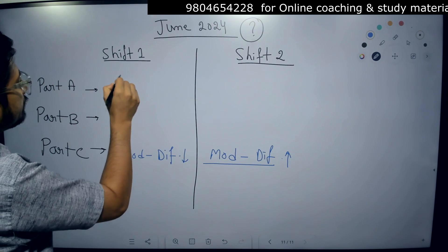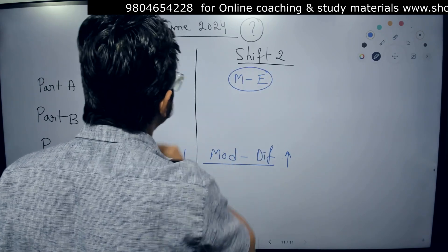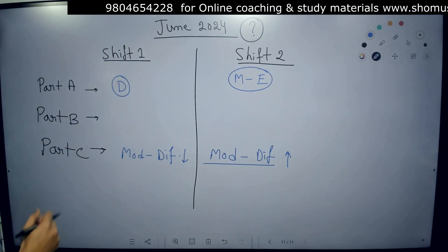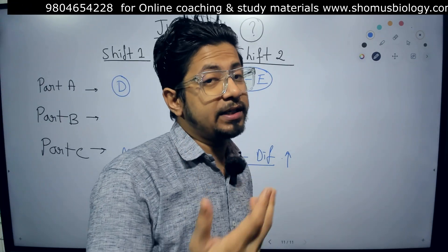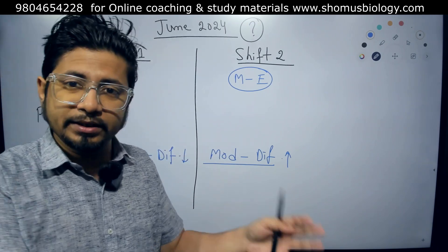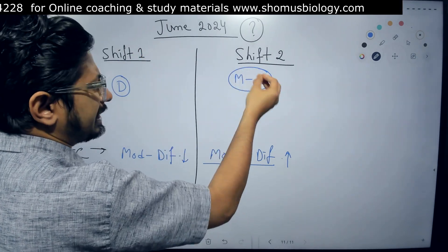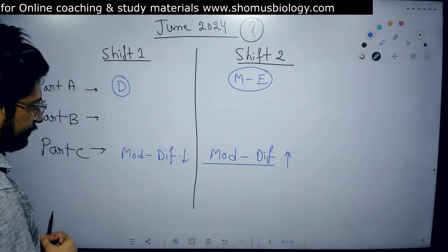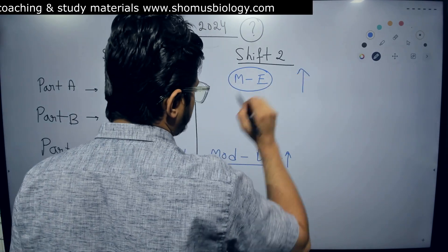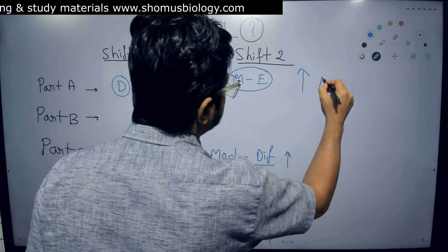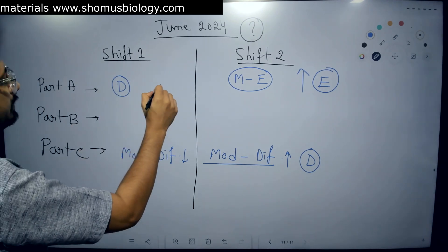Now let me talk about Part A. Shift 1 candidates say it is difficult. Shift 2 said it is moderate to easy. Comparatively, it depends on your practice and preparation. It's a very subjective thing whether a part is easy or difficult to you. But what I got is that between Shift 1 and Shift 2, Shift 2 Part A is a little easier than Shift 1. Part A is easier here. C was more difficult here, and in this case, it is more difficult.